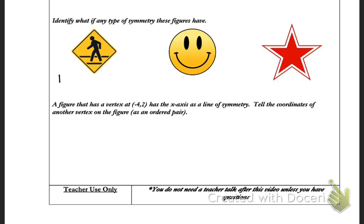In the first example, we have a crosswalk sign. You want to think of the whole image. Is there any way I can look at that image and it's going to lay exactly on top of itself, including the person inside? There's no way I could lay that on top of itself. There's also no way I can turn that shape so it lays on top.